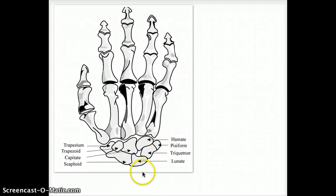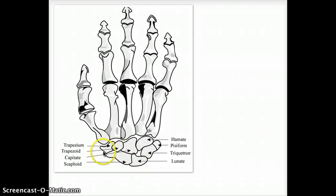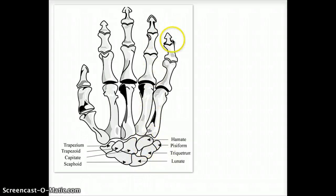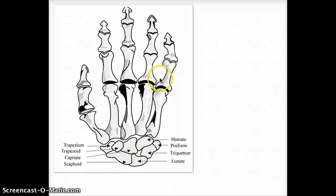Those are the three clinical significances of the carpal bones. Scaphoid is the most commonly fractured, even though it's the hardest to fracture. Lunate — dislocation of lunate on an outstretched hand can cause median nerve damage. And hamate is aligned with the fifth digit, and this is the one that can cause fracture of the hook of the hamate when you're hitting the ground or hitting something hard with force downwards.